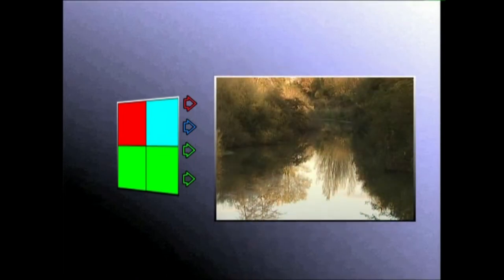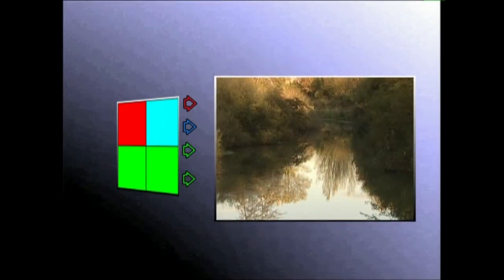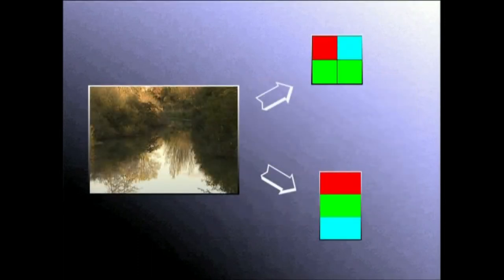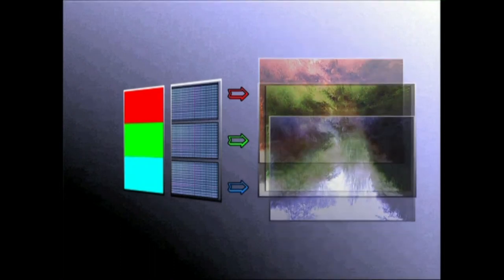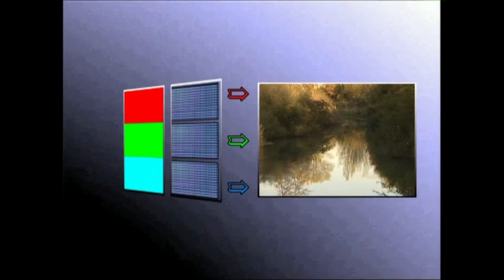Sentxore bakarreko sistema hau etxeko bideokameretan erabiltzen da batez ere. Beste teknikak hiru sentxore erabiltzen ditu. Sentxore bakoitzari iragazki bana ezartzen zaio: iragazki batek kolore gorria iragazten du, beste batek berdea, eta hirugarrenak urdina. Gero, zirkuitu elektronikoek sintesi batukorra dela medio, irudia koloretan erreproduzitzen dute. Sistema hau bideokamera erdi-profesional eta profesionalek erabiltzen dutena da.